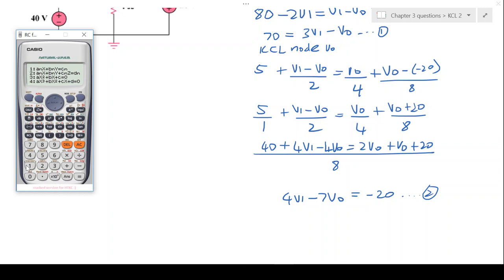I'm going to select the equation mode with two linear equations with two unknowns. I'm going to put the coefficients. So my coefficients are 3, minus 1, and 70. So 3, minus 1, and 70. And the coefficients for my second equation is 4, minus 7, and minus 20. So 4, minus 7, and minus 20.